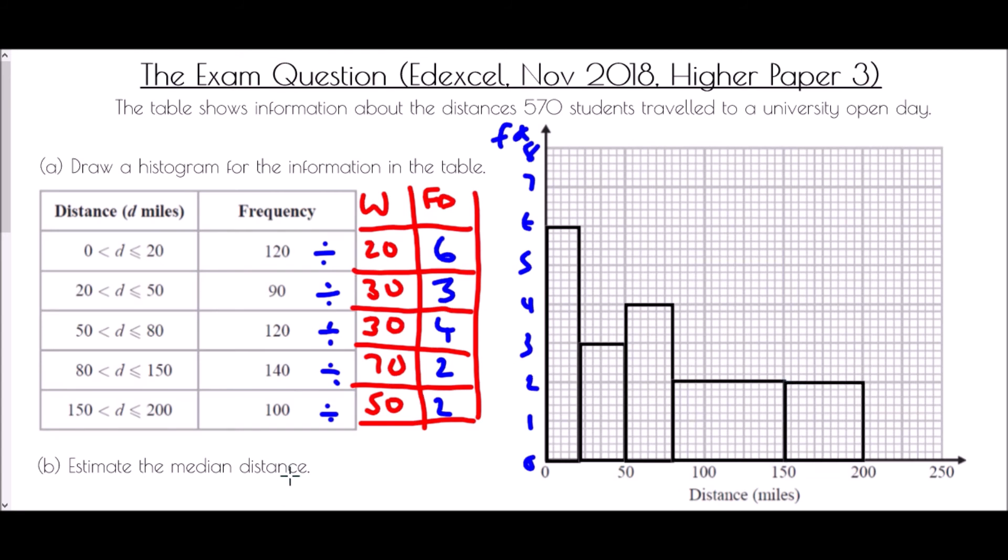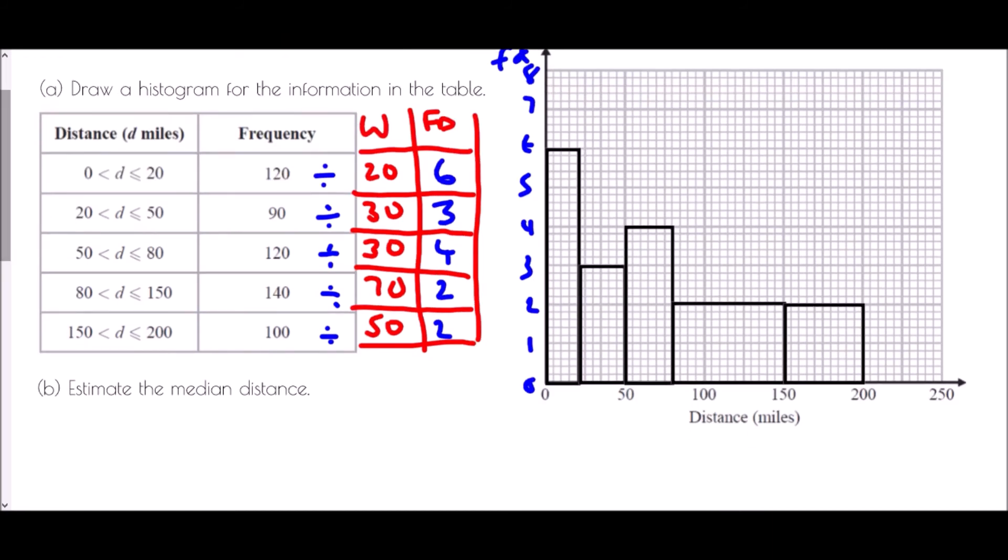Now the main part of this question though is to estimate the median distance. Now you could do this from the original table but if this was a case where you only had the histogram how would you find the median? Well the key is knowing how many people were involved in total.